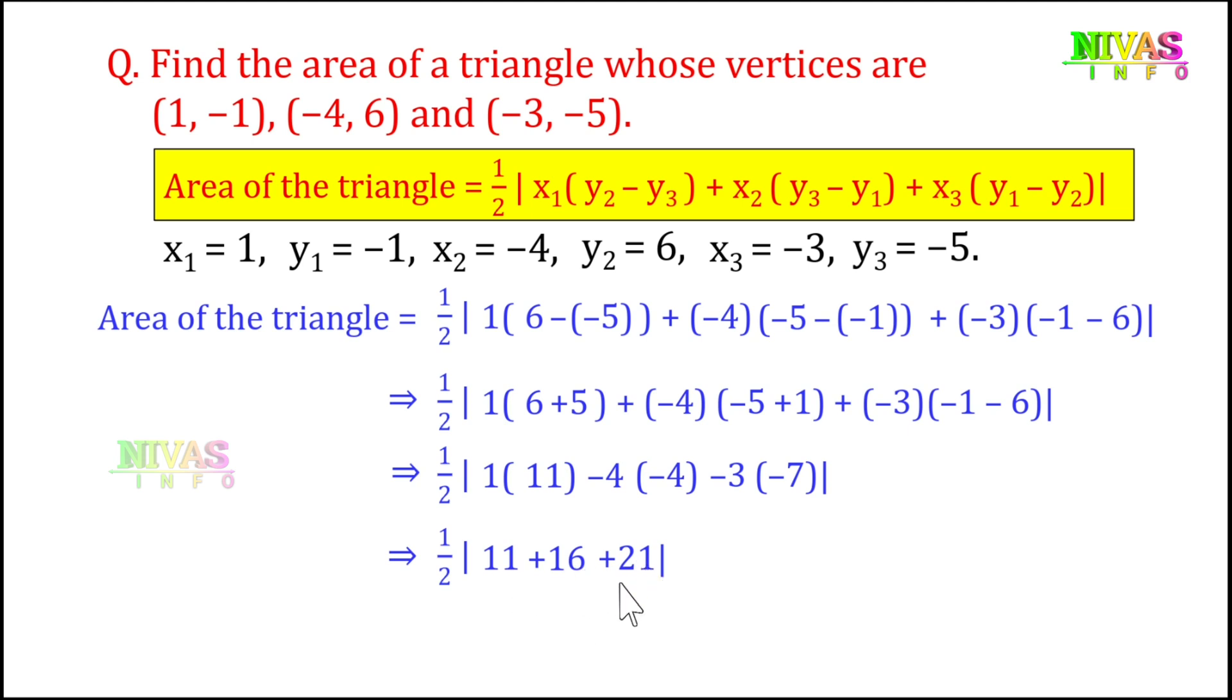Now adding: 11 plus 16 is 27, plus 21 is 48. So one by two into 48. Cancel 2 into 24, so the area of triangle is 24 square units.